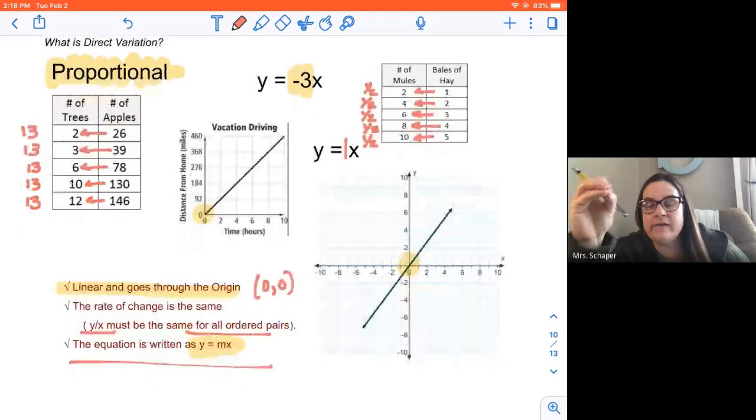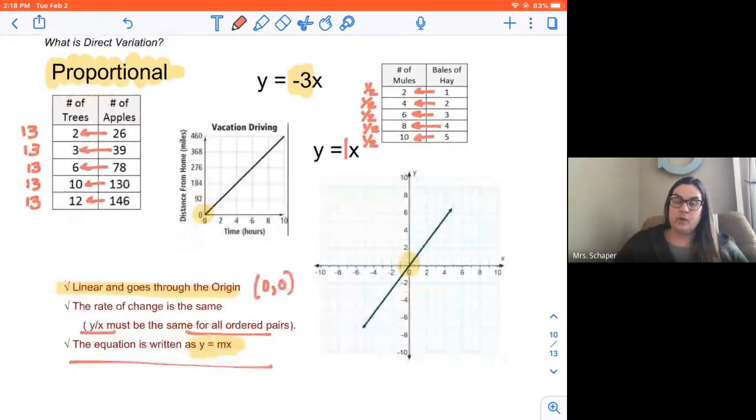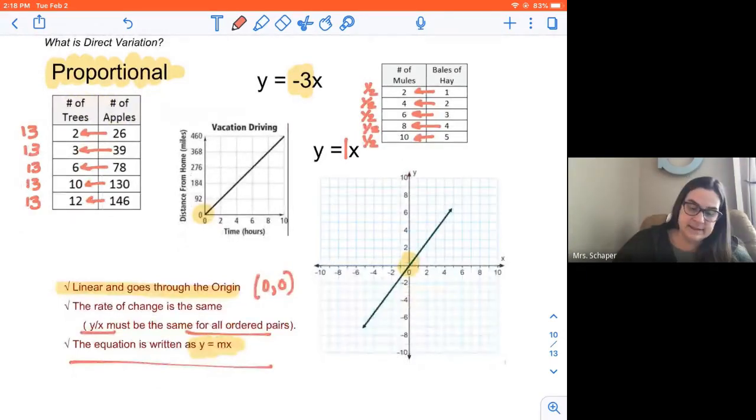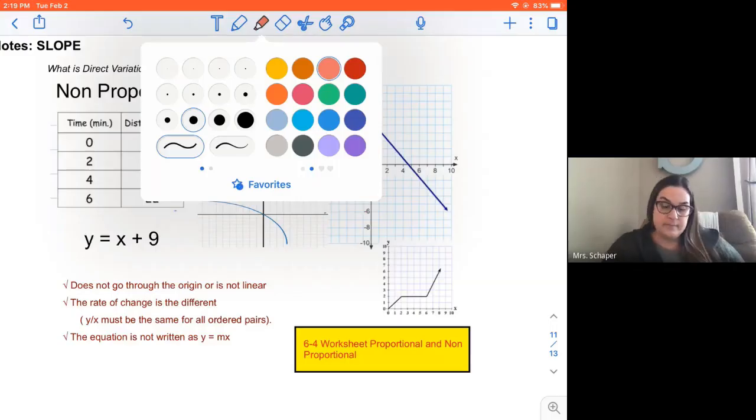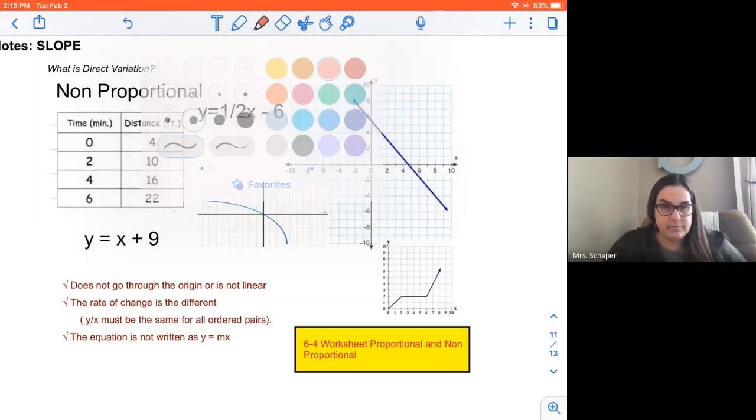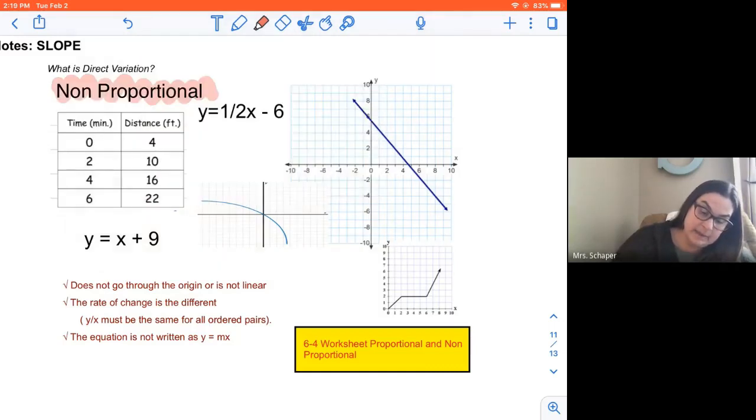Your x and y vary directly. Now in this next slide, I'm going to show you some that are non-proportional. Non-proportional examples. It's coming, it's slow. Non-proportional means that it does not go through the origin or is not linear.